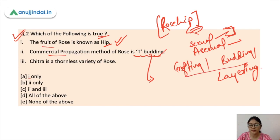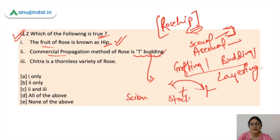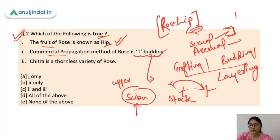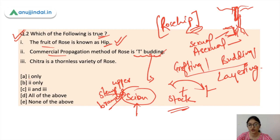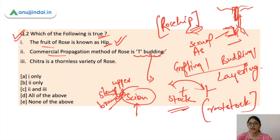In grafting and budding, you connect two parts together. One is the scion and the other is the stock. The scion is the upper part — where stems and branches will form. The lower root portion is called the stock or rootstock. You connect them and a new plant is formed. Both grafting and budding work this way.